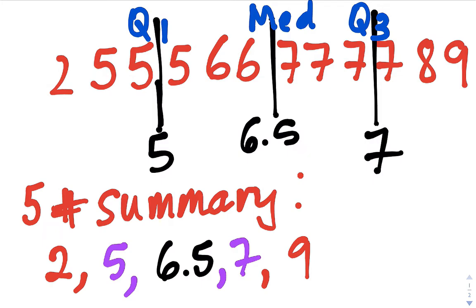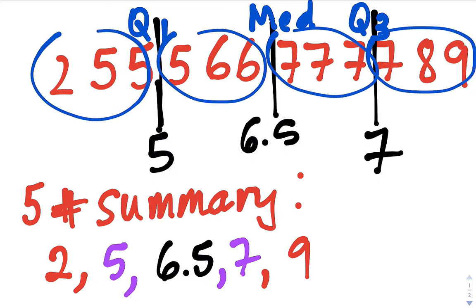A question we haven't really talked about: why are these called quartiles? If you take a look at our data, think about how many separate areas our data is split into — there's four. And if you think about a dollar, how many quarters are in a dollar? There's four. So just like four quarters in a dollar, there are four quartiles in a whole set of data, and there's the same amount of data in each quartile.